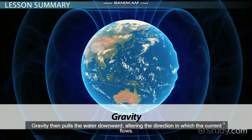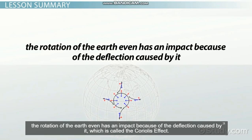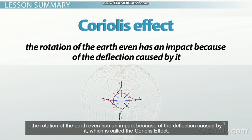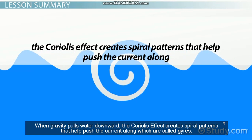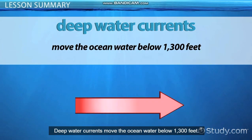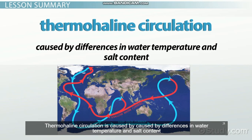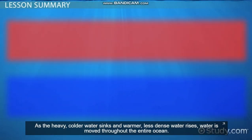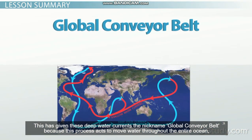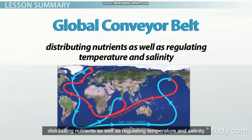Since there is so much water involved and it is moving over a large distance, the rotation of the Earth even has an impact because of the deflection caused by it, which is called the Coriolis effect. When gravity pulls water downward, the Coriolis effect creates spiral patterns that help push the current along, which are called gyres. Deep water currents move ocean water below 1,300 feet. Thermohaline circulation is caused by differences in water temperature and salt content. As the heavy, colder water sinks and warmer, less dense water rises, water is moved throughout the entire ocean. This has given these deep water currents the nickname global conveyor belt, as this process distributes nutrients and regulates temperature and salinity.